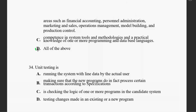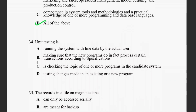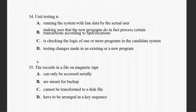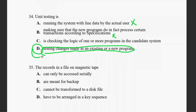Question thirty-four: unit testing. Unit testing is not running the system with live data by actual users, not acceptance testing. It is testing changes made in existing or new programs — checking existing and new programming. That is unit testing.